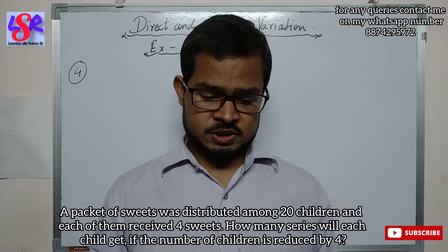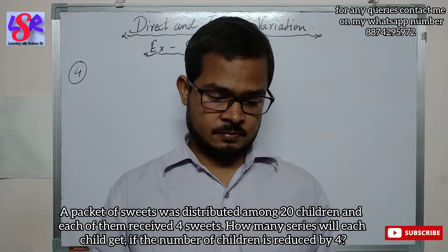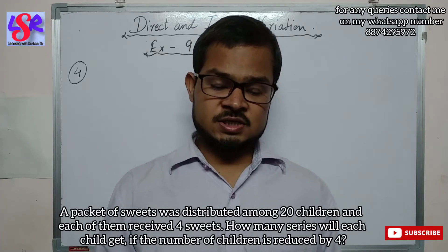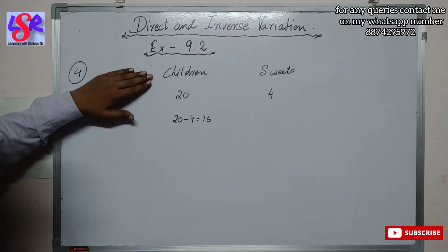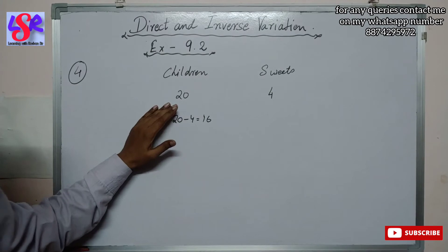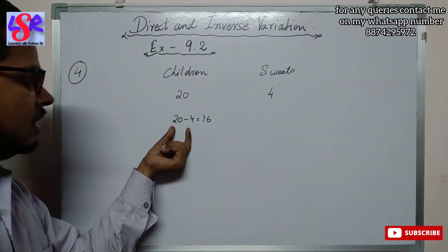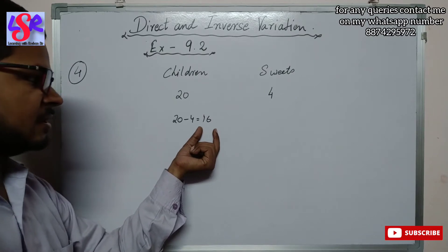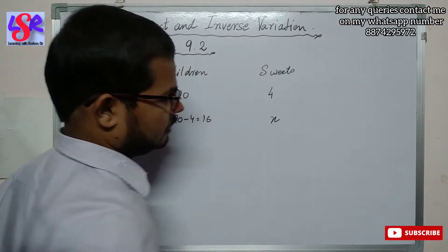Now let's go with question number 4. Here, a pack of sweets was distributed among 20 children and each of them received 4 sweets. How many sweets will each child get if the number of children is reduced by 4? So the number of children becomes 16, and we have to calculate how many sweets each child will get.